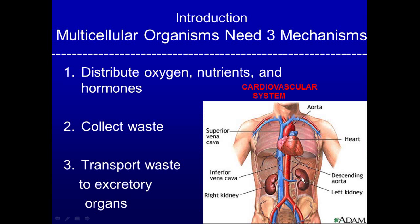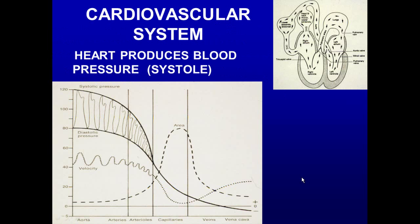The cardiovascular system is composed of two closed sets of pipes. You have those that come from the heart to the lung and go back to the heart, and then you have those that go from the heart throughout the rest of the body and return to the heart.